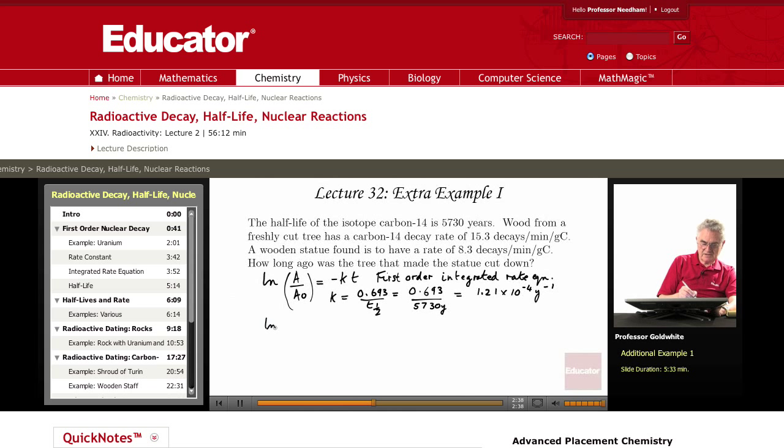Therefore, we can represent A and A0 as the 8.3 decays per minute per gram of carbon divided by what it would have been initially when the wood was fresh, which is 15.3 decays per minute per gram of carbon.